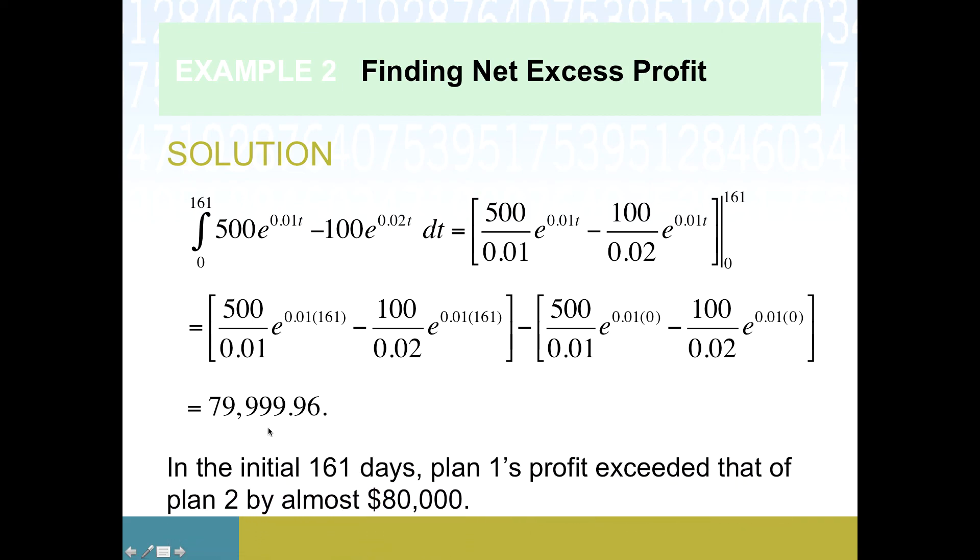And so our conclusion from this is basically, in the initial 161 days, because we went from now from t equals zero until t equals 161, plan one's profit exceeded that one by pretty close to $80,000, $79,999.96. So we don't really know their absolute values of profit. We don't know where they started. But what we do know is that plan one grew by $80,000 more than plan two did. So there's another application of area between two curves. We'll come back in the next video, and we'll talk about another application of this principle.